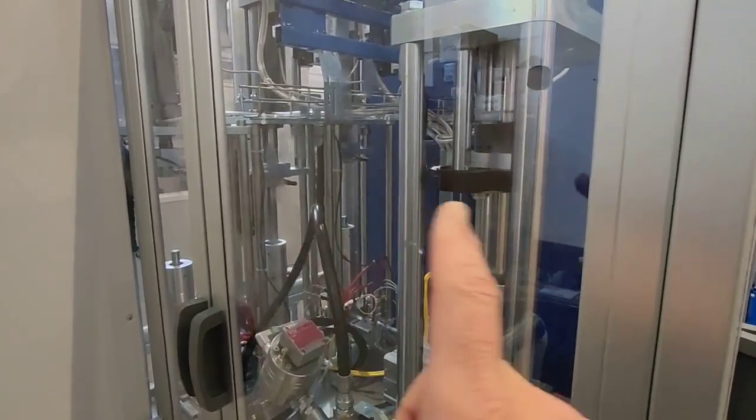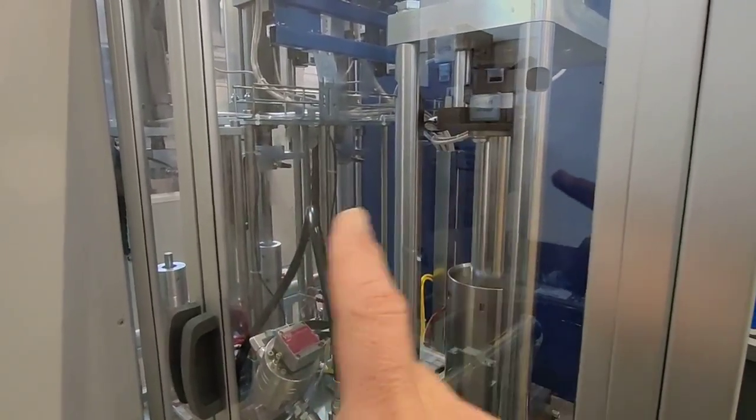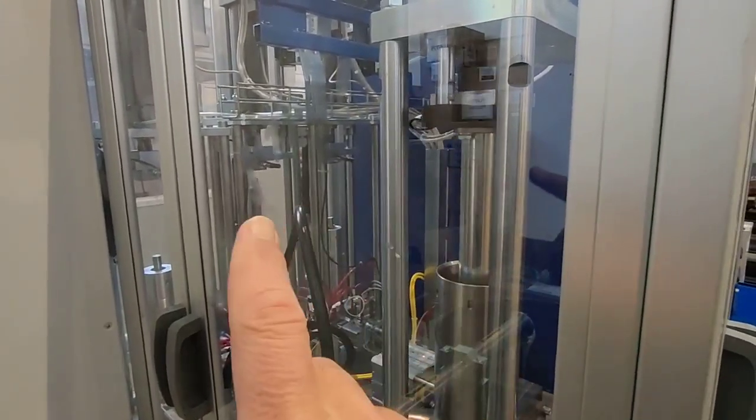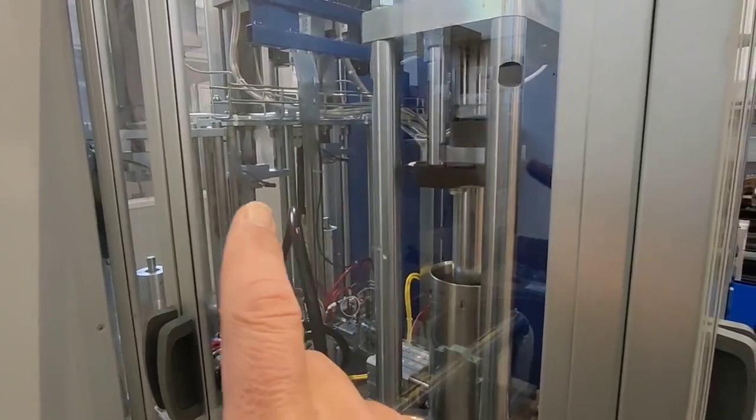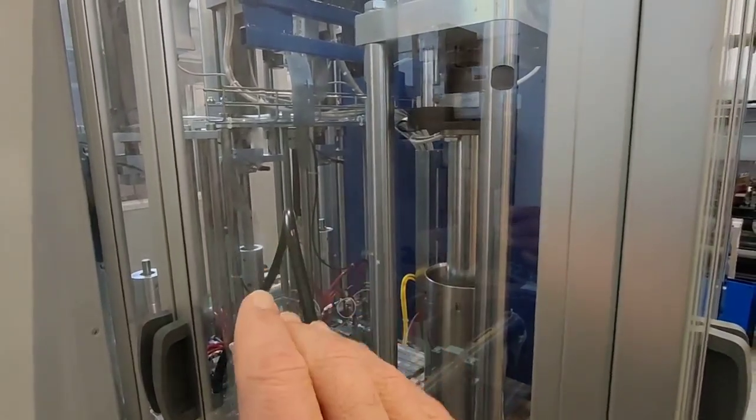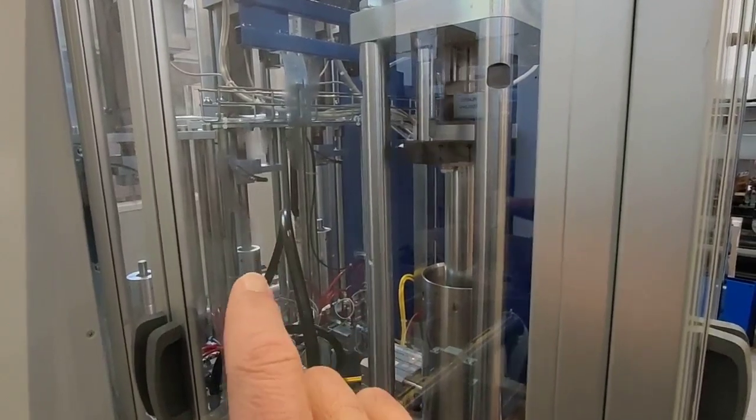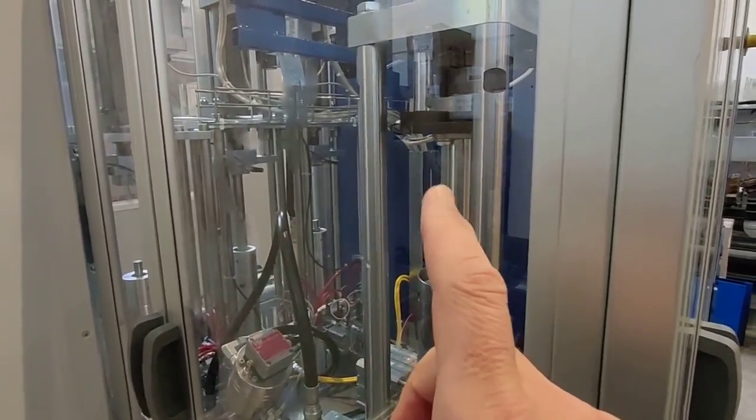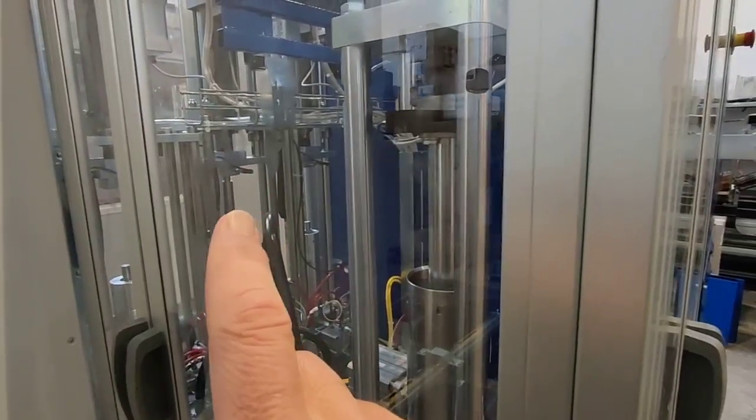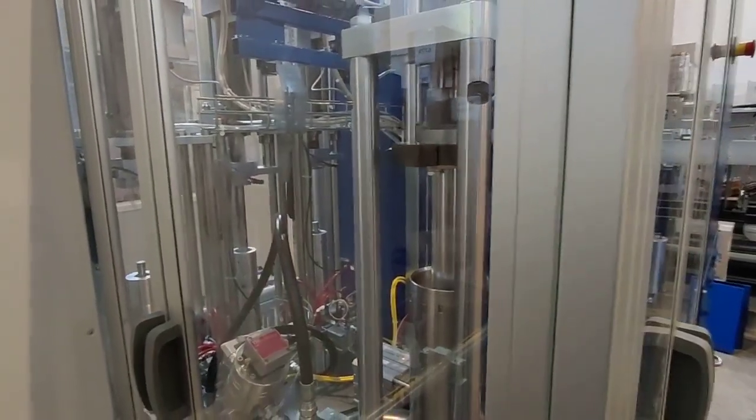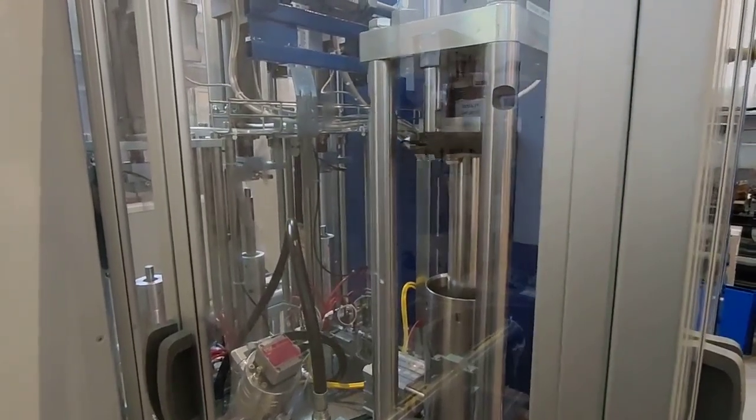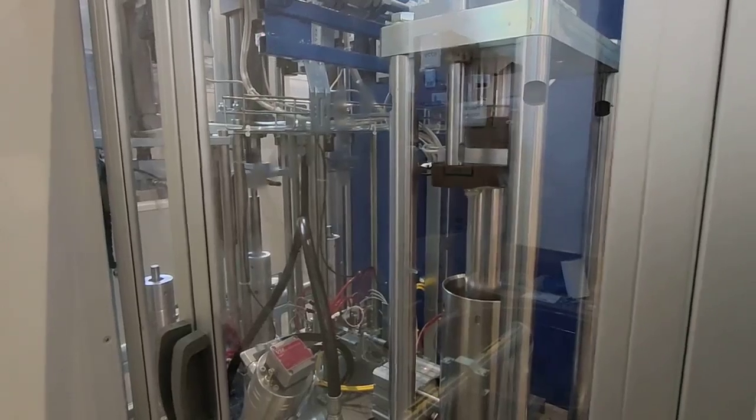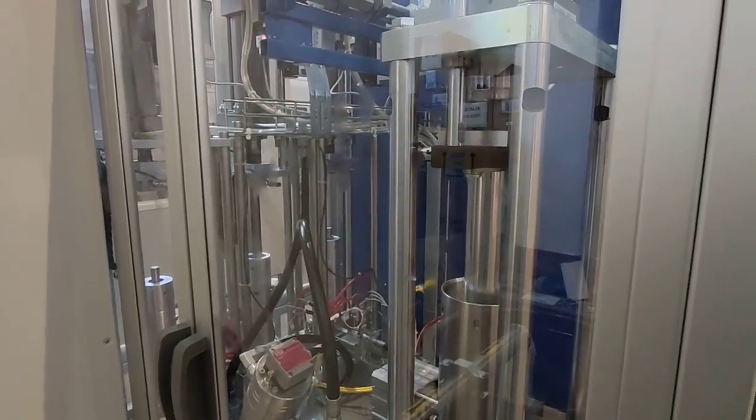As you can see the stroke of the two dosing units are different so that the speed of this one and this one is also different in order to start and to finish the stroke at the same moment. Therefore the speed of this one is faster, the speed of this one is slower, and you can set it by the HMI display depending on the mixing percentage you set up.